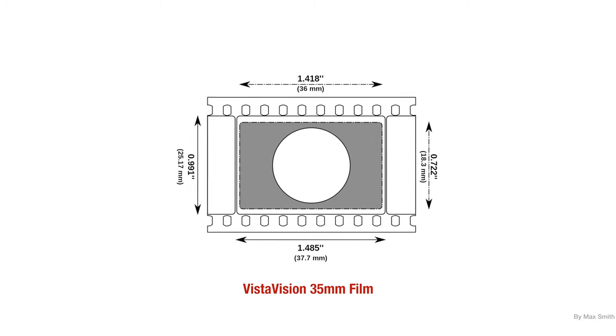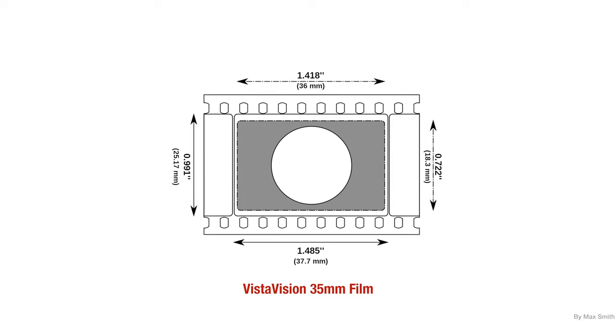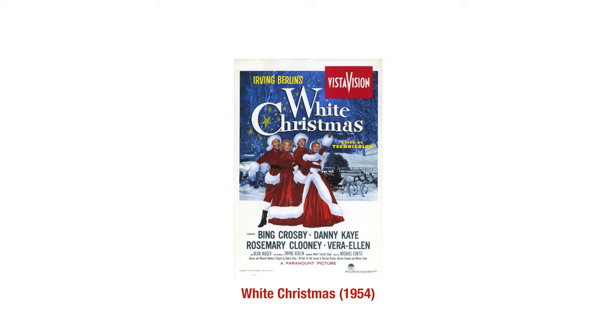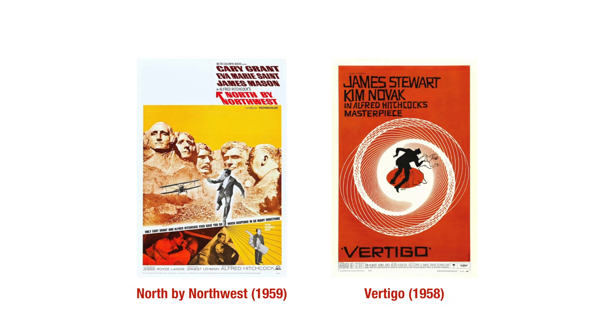Paramount had other ideas. They weren't impressed with the film grain found with a Cinemascope image, so they developed their own system called Vistavision. Vistavision was based on traditional 35mm film put on its side but recorded at a much wider aspect ratio of 1.85 to 1. The first Vistavision film was called White Christmas, released in 1954. Vistavision was also popular and would become Alfred Hitchcock's go-to aspect ratio for many of his films, including North by Northwest and Vertigo.